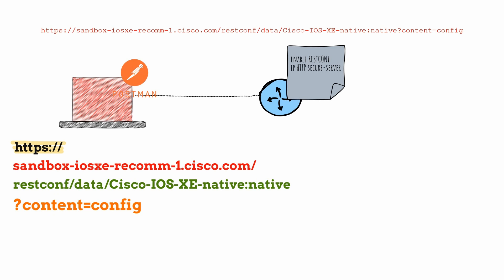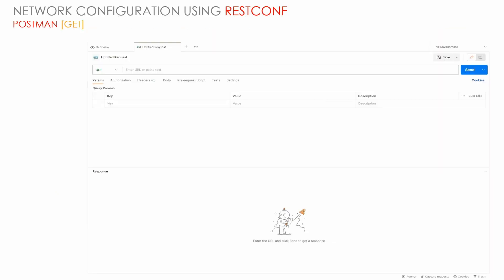RESTCONF uses REST principles and therefore uses HTTP verbs appropriately. The most important thing to note is the type of operation we want to perform. Using HTTP-based APIs with Postman allows us to interact with devices using the RESTCONF protocol without the need to write a lot of software commands. Instead, we use Postman's easy-to-use GUI. In this section we explore how to use Postman to interact with our devices.